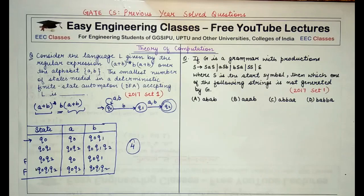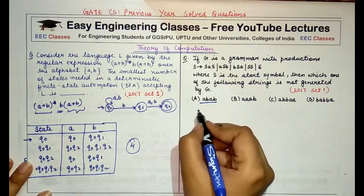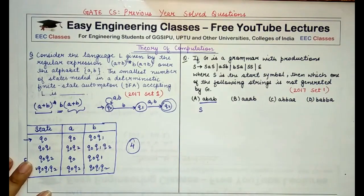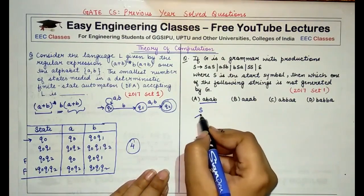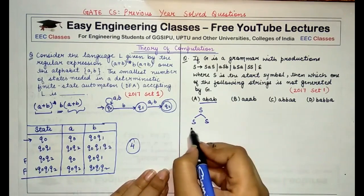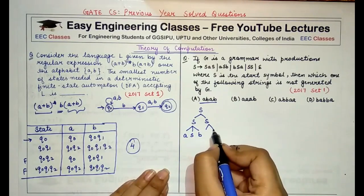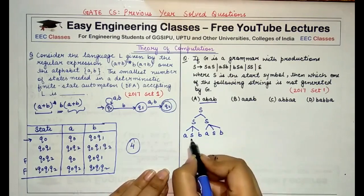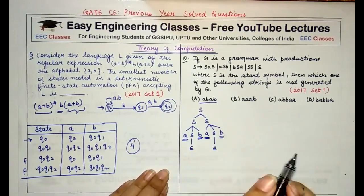Coming to the second question: we are given a grammar with productions where S is the start symbol, and we have to find which of the following strings is not generated by G. Starting with string ABAB and drawing its parse tree, I start from S, go to SS, then replace with ASB and again ASB, then replacing both inner S's with epsilon — giving ABAB. So this string is possible.